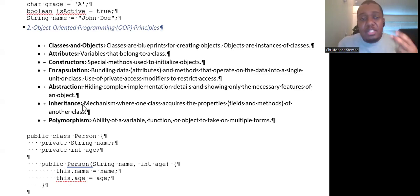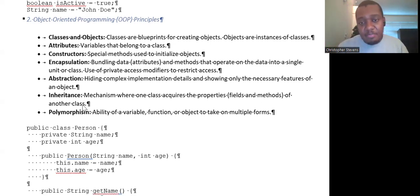There is also encapsulation, abstraction, and inheritance that we talked about. Encapsulation bundles data, attributes, and methods together so that we could operate on the data in a single unit or class, and use private access modifiers to restrict access. Abstraction was like our blueprint - we could hide the complexity and implementation details, showing only the necessary features of the object. Inheritance was a mechanism where one class acquires the properties, which are the attributes of another class. We have a superclass and a subclass.